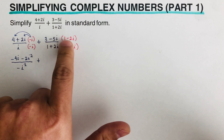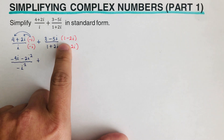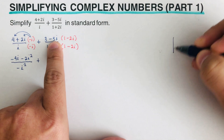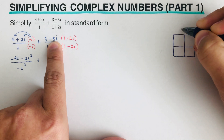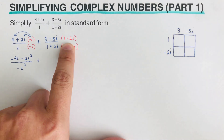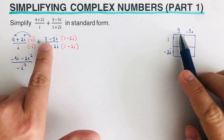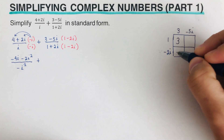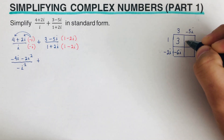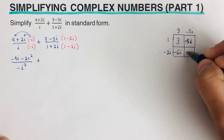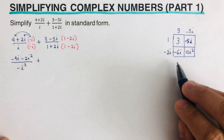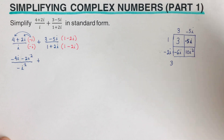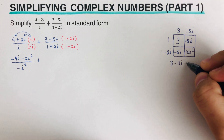For the second fraction's numerator, we use a two-by-two box. We write 3 minus 5i across the top and 1 minus 2i down the side. Multiplying: 1 times 3 is 3, 1 times negative 5i is negative 5i, negative 2i times 3 is negative 6i, and negative 2i times negative 5i is 10i squared. Combining: 3, then negative 6i plus negative 5i is negative 11i, plus 10i squared.